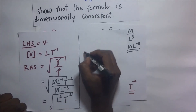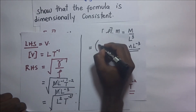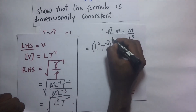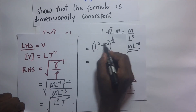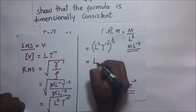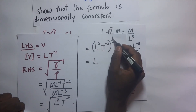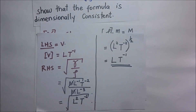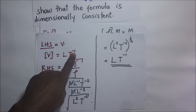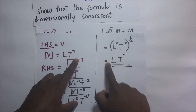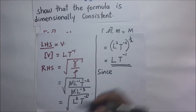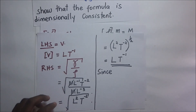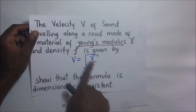So this becomes L squared T to the power negative 2, all to the power one half (since it's under a square root). Multiplying through by a half: one half times 2 gives L to the power 1, and negative 2 times one half gives T to the power negative 1. So the dimensions of the right hand side are L T to the power negative 1. Since the dimensions on the left hand side are equal to the dimensions on the right hand side, we conclude that this equation is dimensionally consistent.